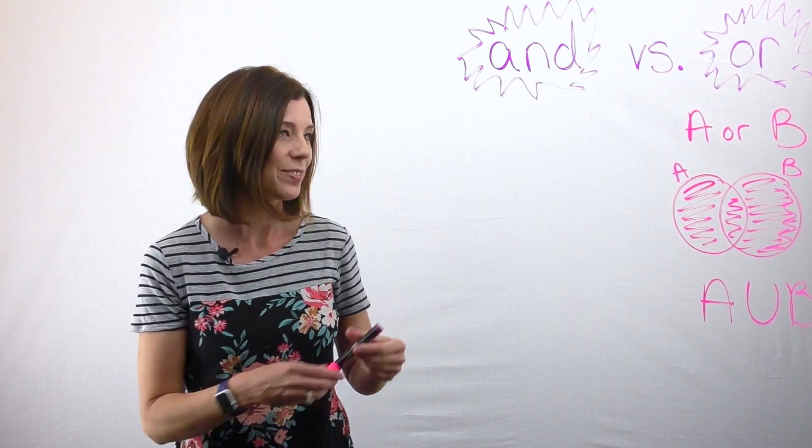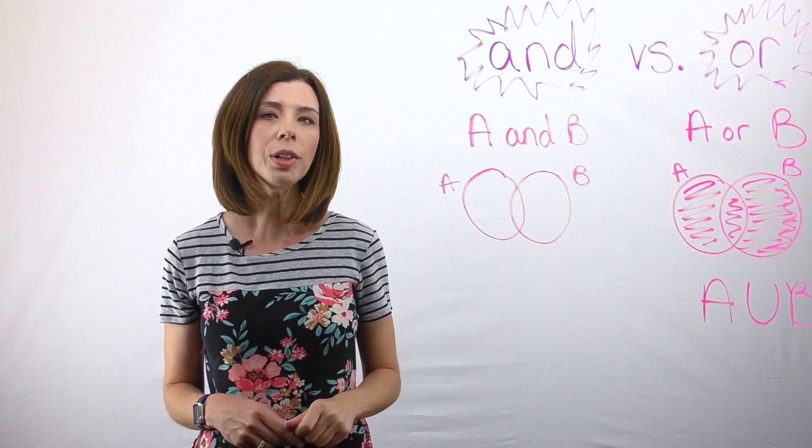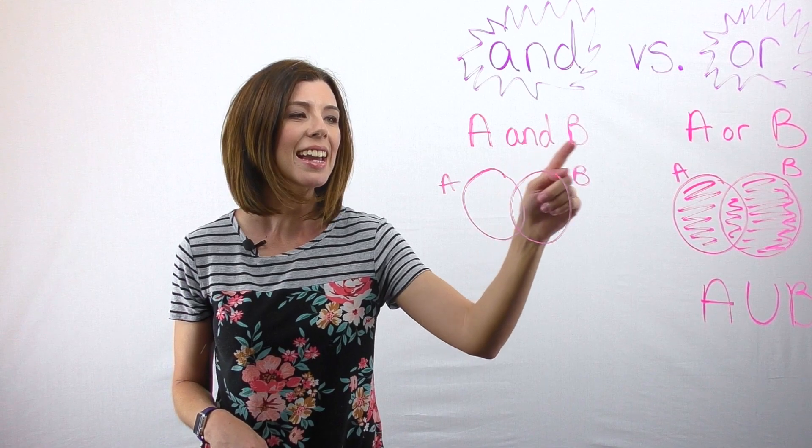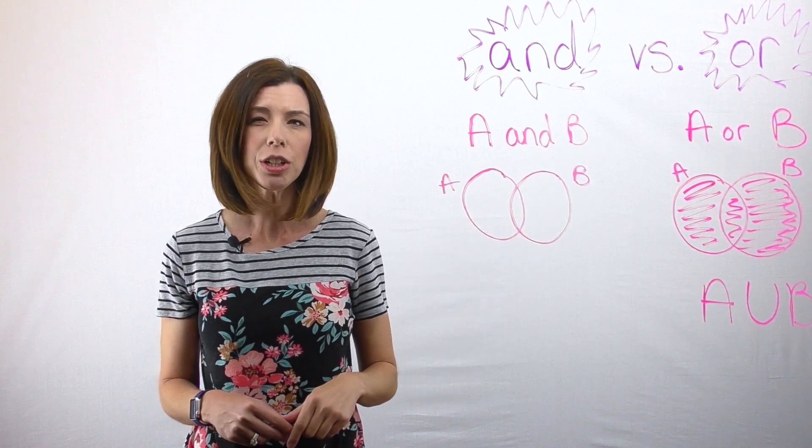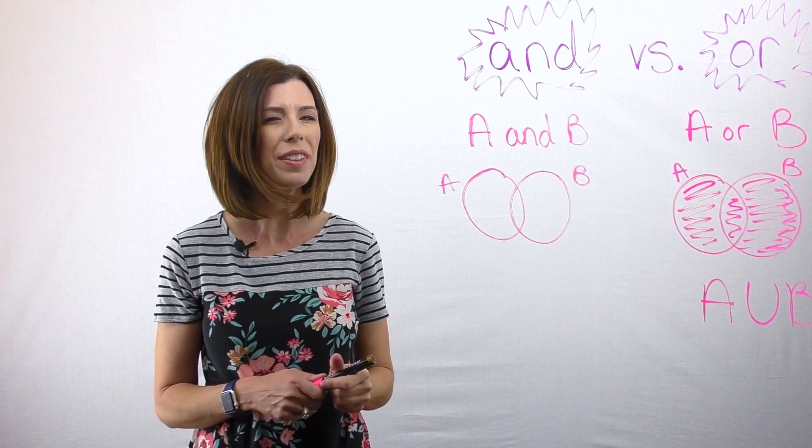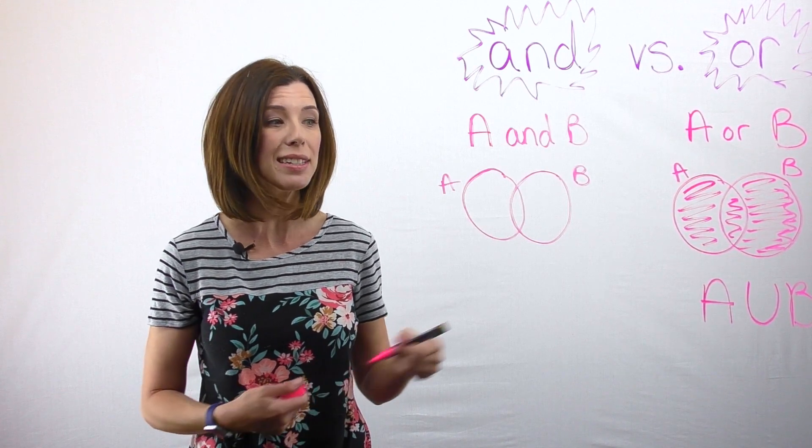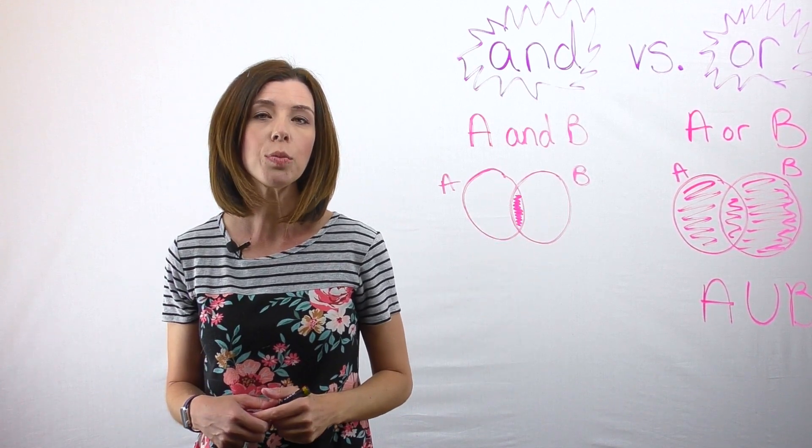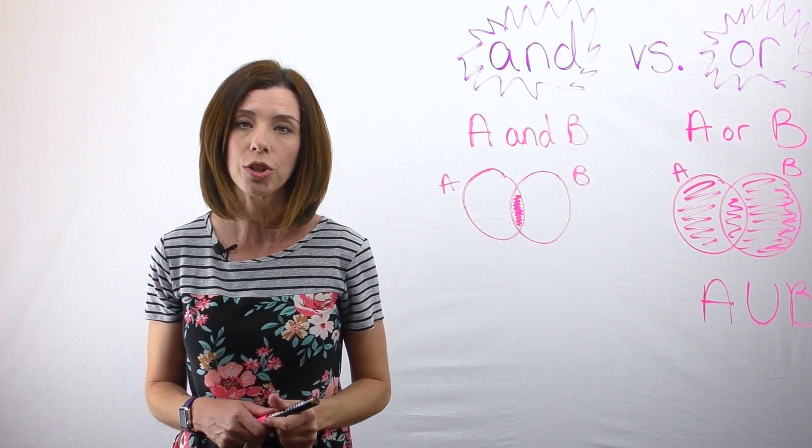Now, let's take a look at and. When I'm looking at and, and I say A and B, I'm actually just talking about the overlap that happens, or the intersection. So I would shade this area. I would write this in set notation with an intersection symbol.